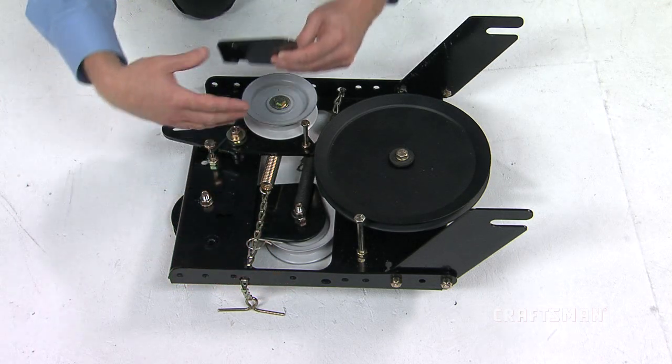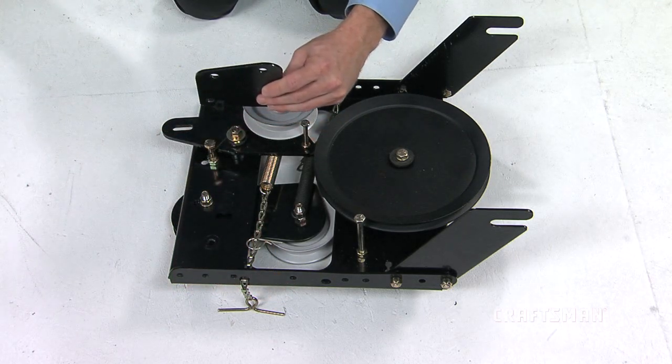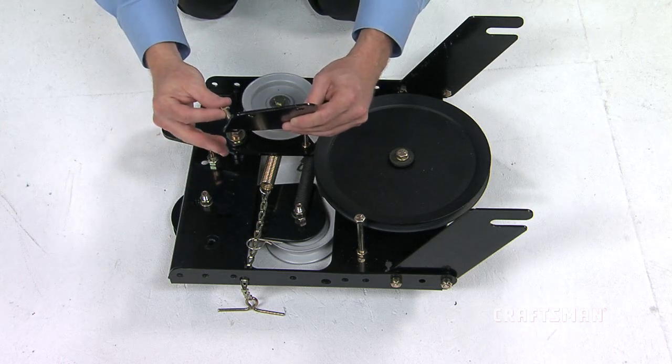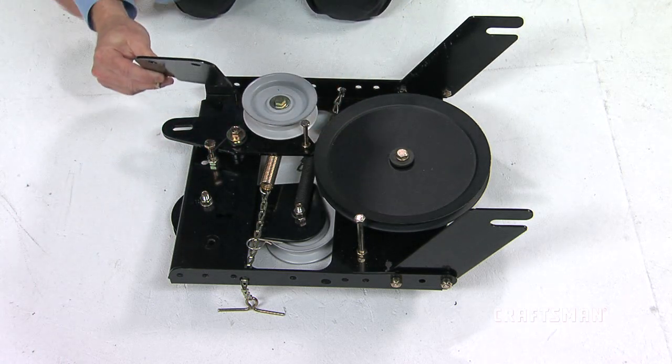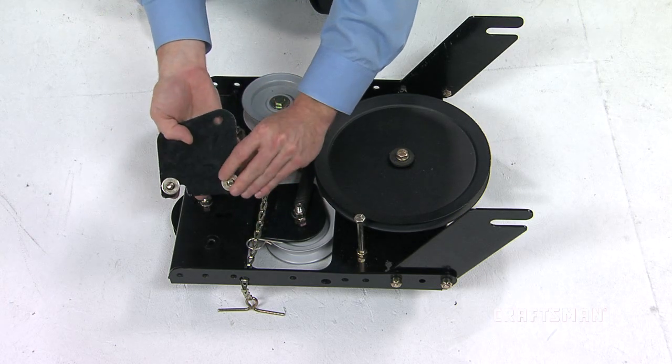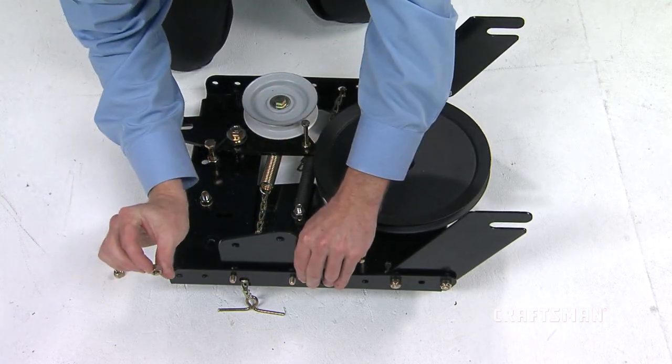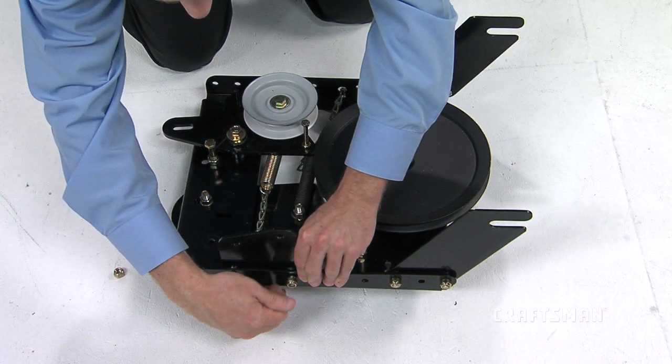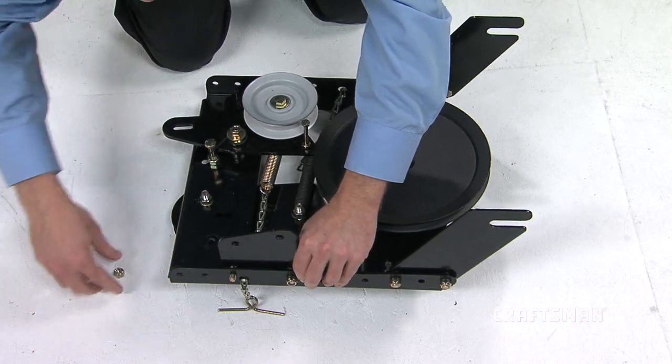Next, attach each front pulley frame bracket, part 12, to the inside of the clutch idler assembly. Fasten them using two 5-16-inch by 1-inch hex bolts, four 5-16-inch washers, and two 5-16-inch nylock nuts.